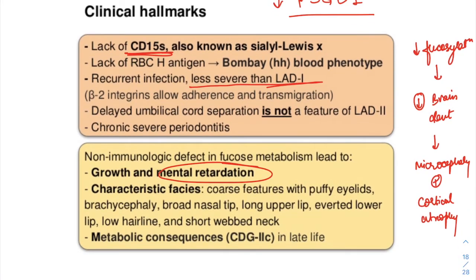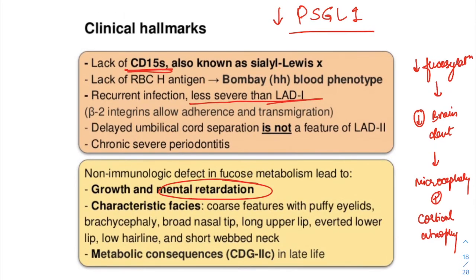Unlike LAD1, patients with LAD2 do not experience delayed separation of the umbilical cord. Individuals with LAD2 do have additional complications not seen in LAD1, which is a unique type of blood group — that is the Bombay or HH blood phenotype.